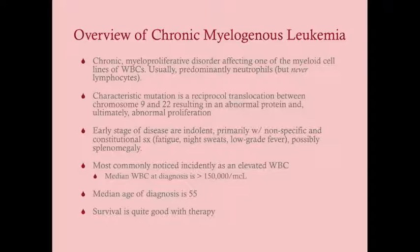Part of chromosome 9 moves over to chromosome 22 and part of chromosome 22 moves over to chromosome 9. The result is a fusion protein called BCR-ABL, which leads to CML. In 95% of patients with CML, this translocation is present, making detection of the translocation a very good diagnostic test for CML.